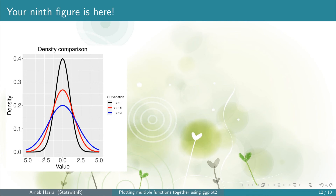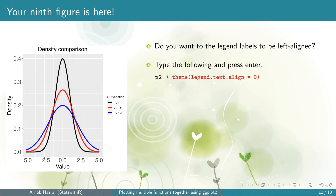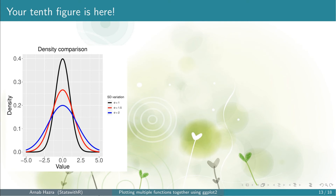Note that the legend labels become right-aligned, which doesn't look good. To make the legend labels left-aligned, add the line theme(legend.text.align = 0). You can see that the legend labels are left-aligned now.